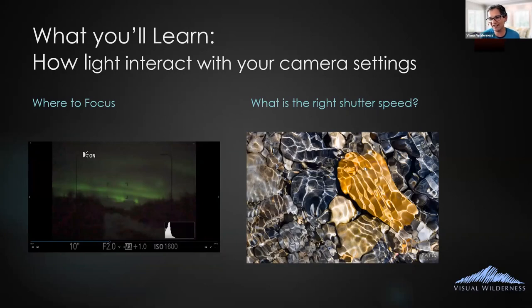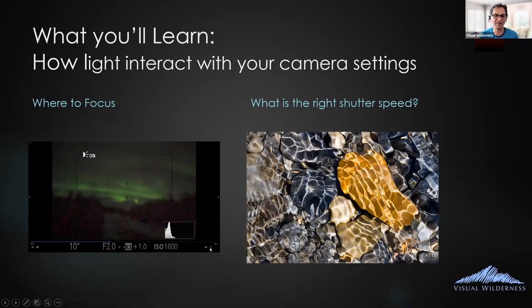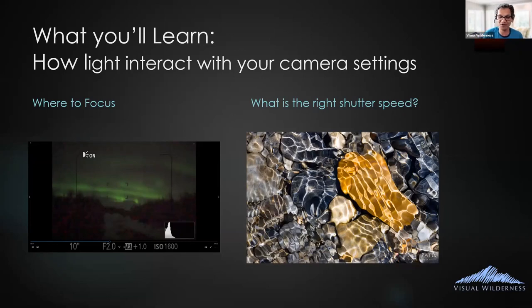The other thing you can control is your camera settings. One of the detailed explanations we're going to give you is how to use your camera settings to capture the light you see. Here's a screenshot from one of the videos I'm going to show on Saturday — photographing Aurora. When you're photographing Aurora with a mirrorless camera, it is so dark, especially on a night without a moon, that it's hard to see on the back of your camera what you're trying to capture.